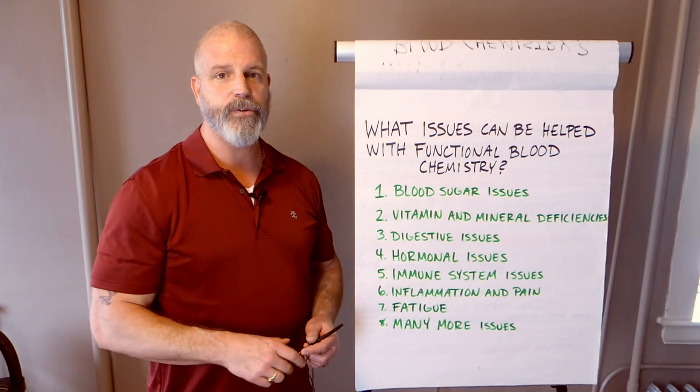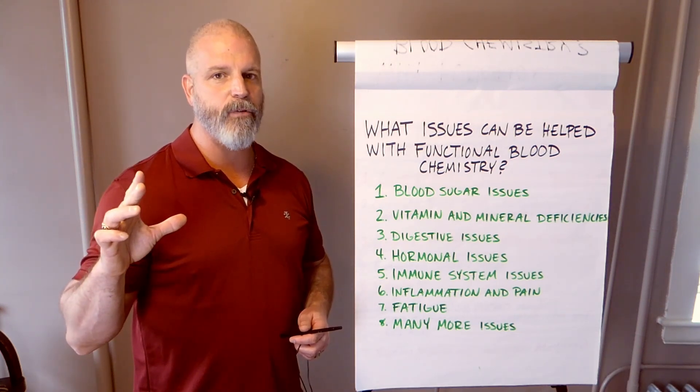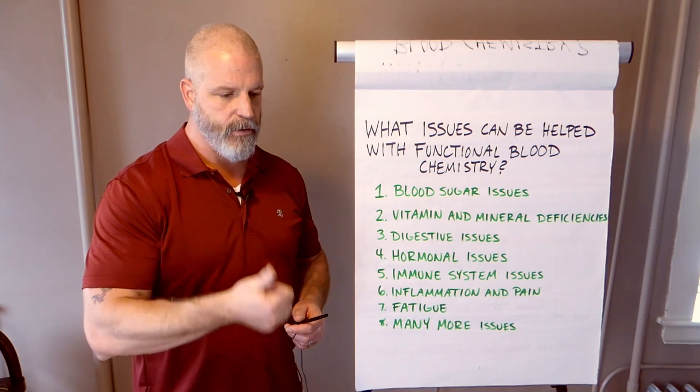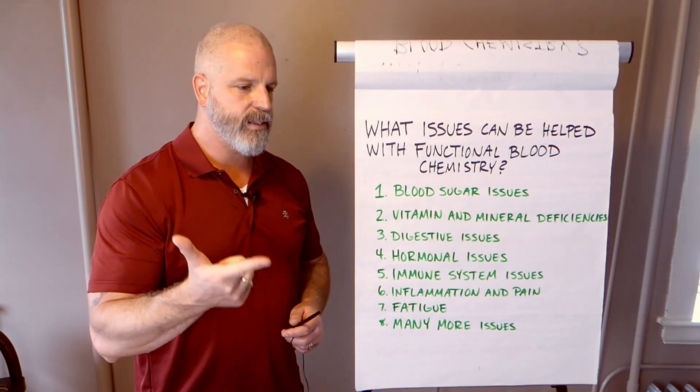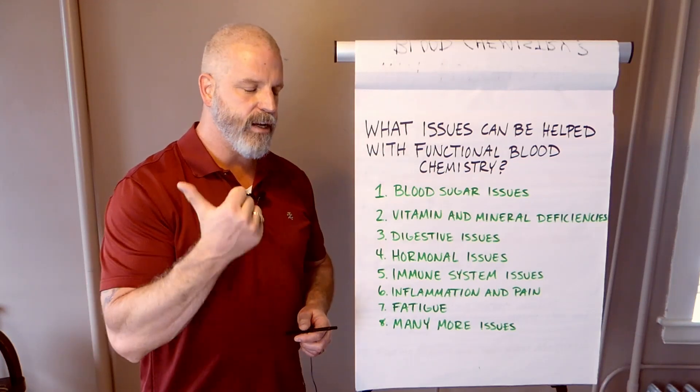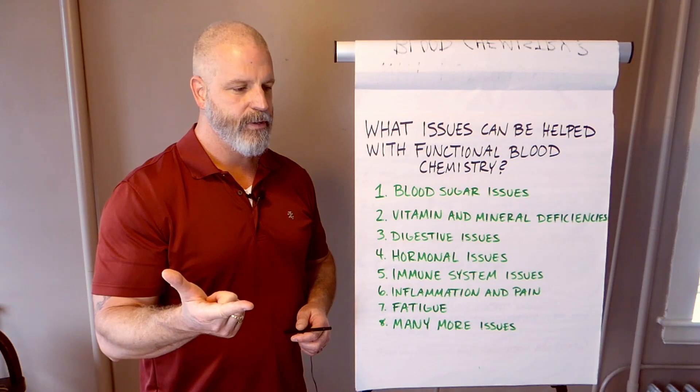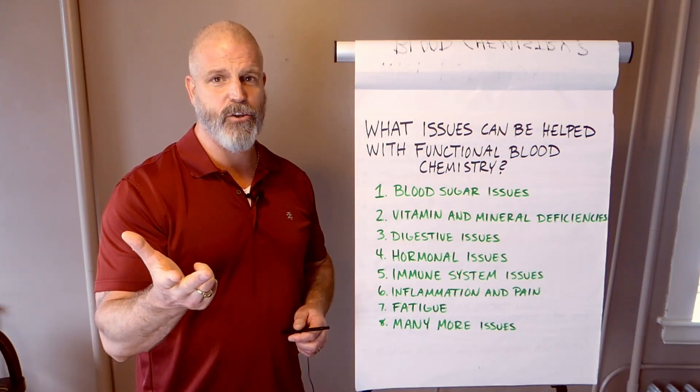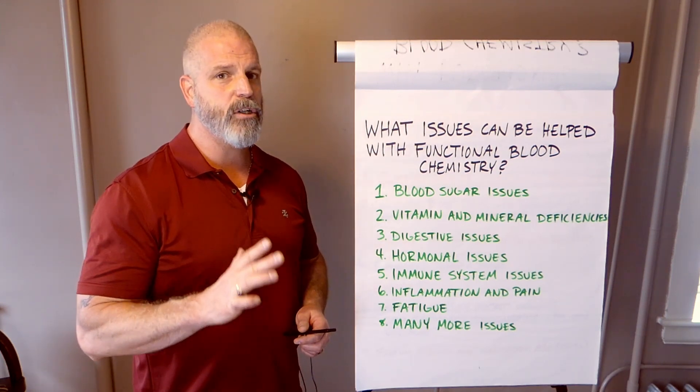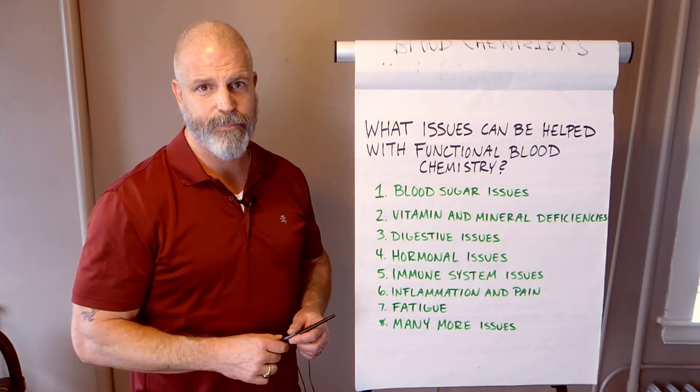And then I said many more issues. Pretty much anything that goes wrong with a person is going to be reflected in your blood. Be it fatigue, anxiety, depression, immune system issues, hormonal issues, digestive issues, vitamin and mineral deficiencies, inflammation, pain—they're all going to be reflected in your blood chemistry. And that's the reason why we do it.